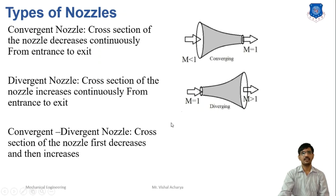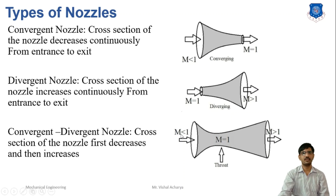The last type is the convergent-divergent nozzle. In this nozzle, the cross-section first decreases and then increases. Flow enters as subsonic in the convergent portion and is converted to sonic flow at the throat condition. Then, after expansion in the divergent portion, the steam is converted into supersonic flow, meaning the Mach number is greater than 1. In summary: for a convergent nozzle, area is decreased; for a divergent, area is increased; and for a convergent-divergent nozzle, area first decreases then increases. Flow conditions are subsonic, supersonic, and subsonic-to-supersonic respectively.